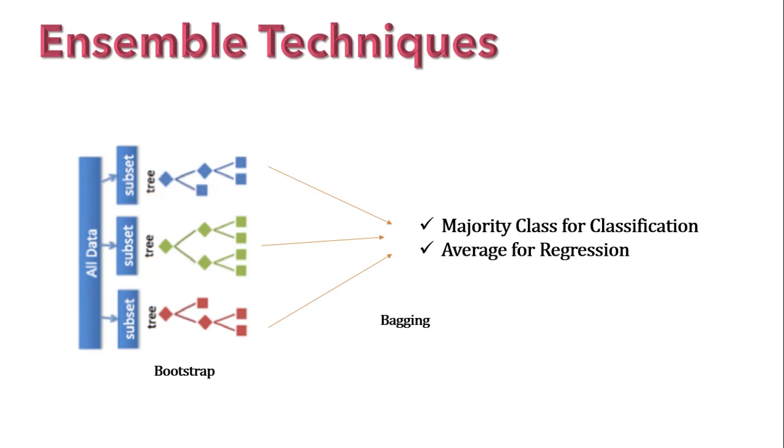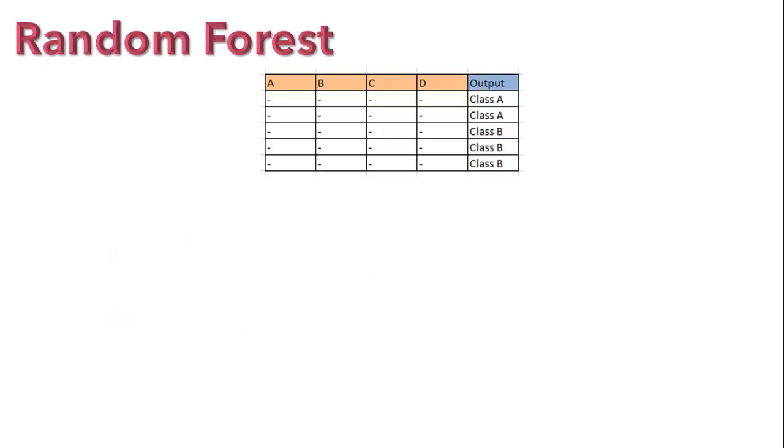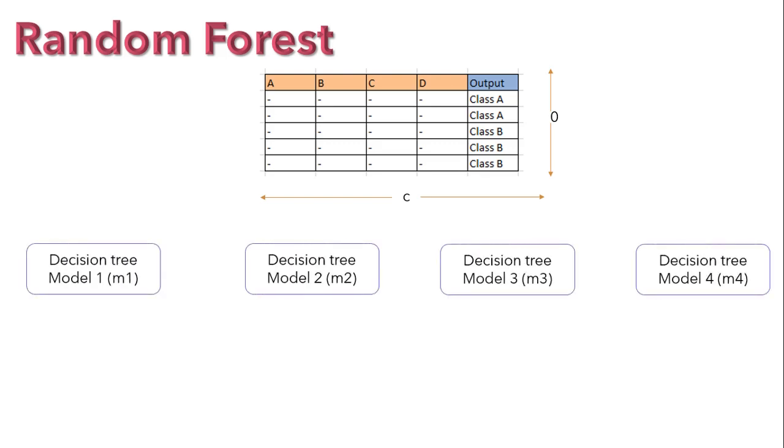So guys, now let's quickly start understanding what is random forest and how is this algorithm used over decision tree. Let's say we have some dataset as shown on the screen and this dataset has O number of observations and C number of columns. So here we are going to use bootstrap technique where we will have different decision tree models with us as shown earlier in the example.